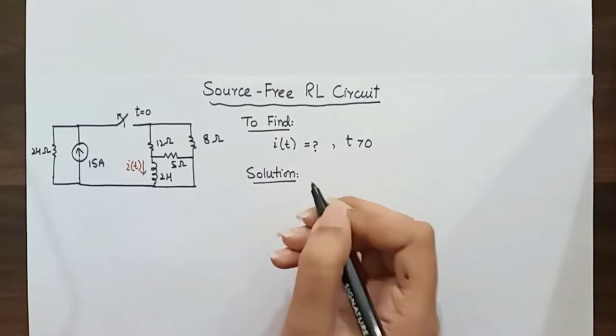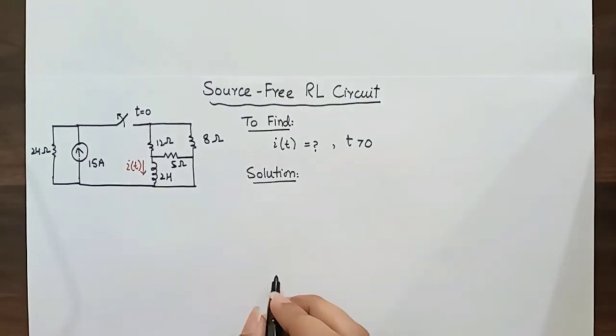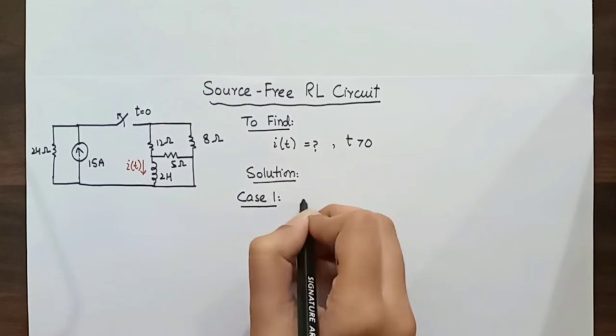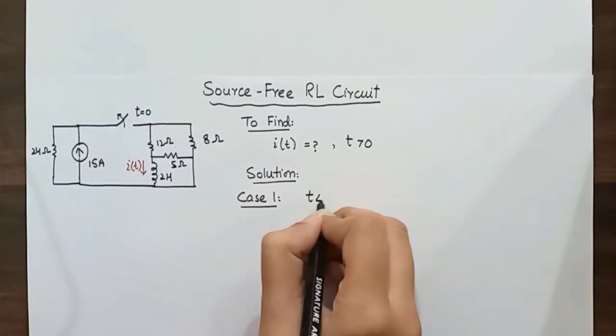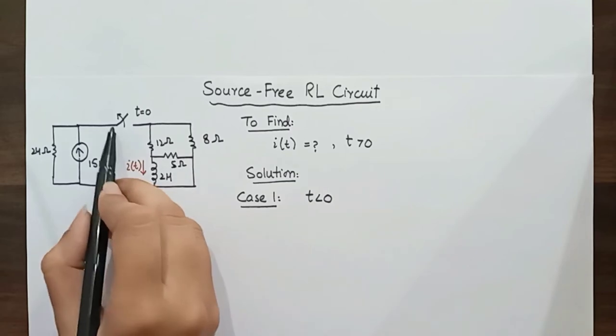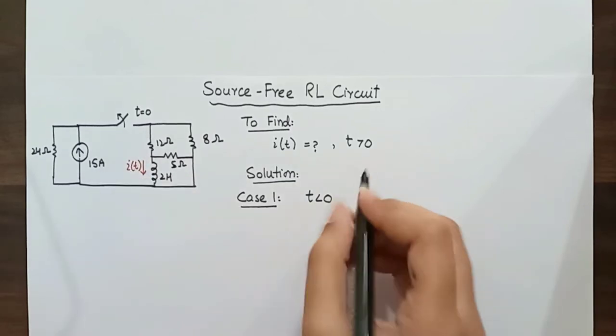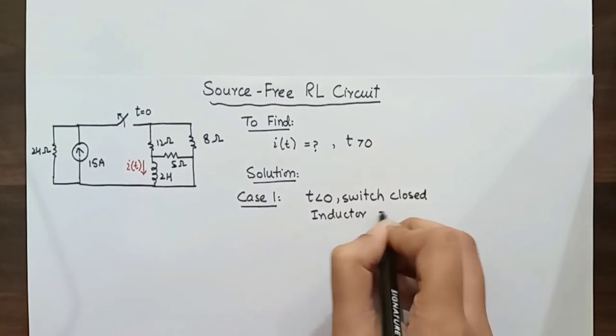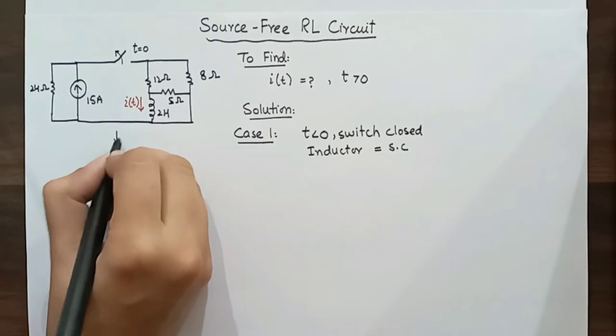We will have two cases when the time is less than zero and when time is greater than zero, and we will find the current for both times passing through the inductor. Case one is when time t is less than zero, the switch is closed for a long time and inductor acts like a short circuit to DC source. Let's simplify this circuit.